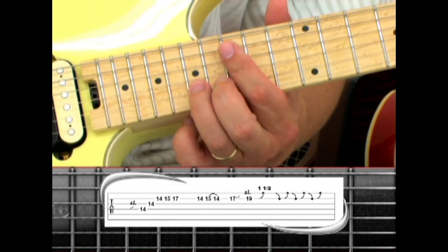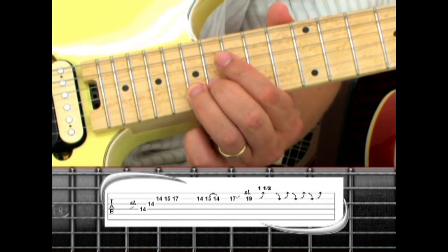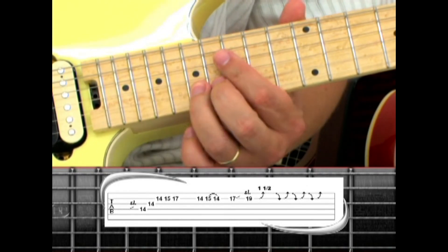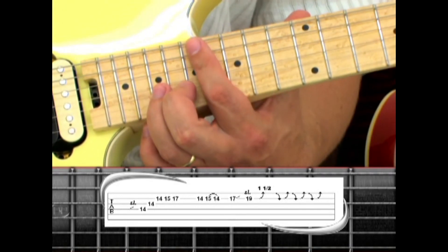So play 17, slide to 19, bend and release 3 times with a final bend and a mute. Then end the solo the same way as before.